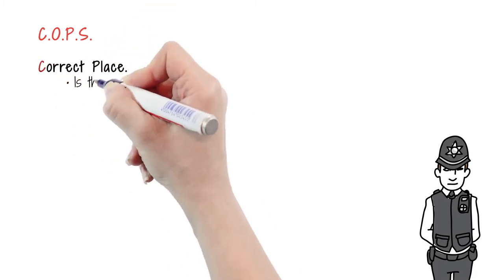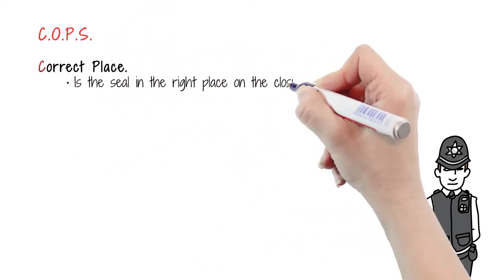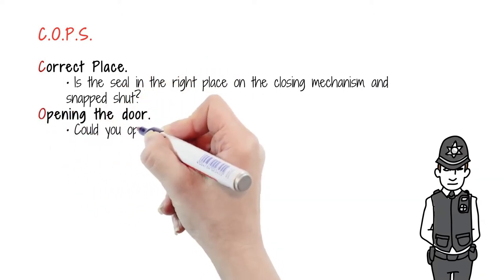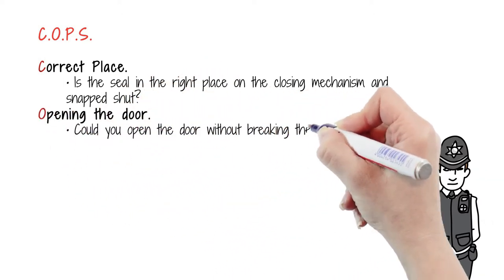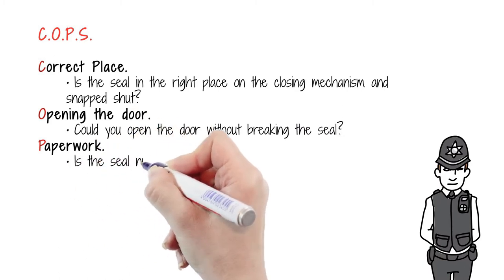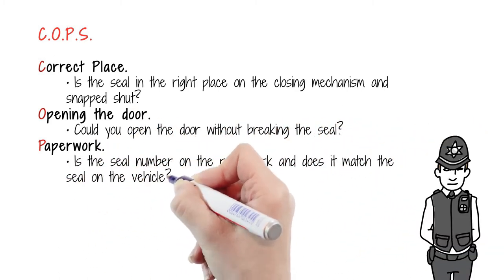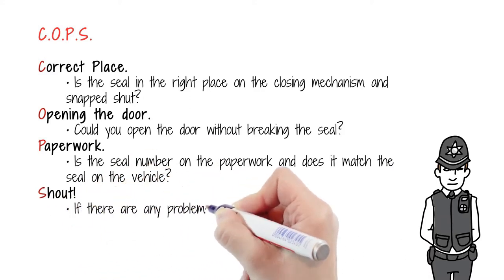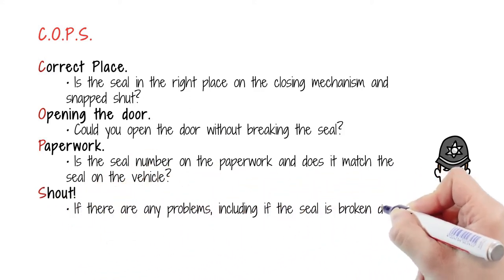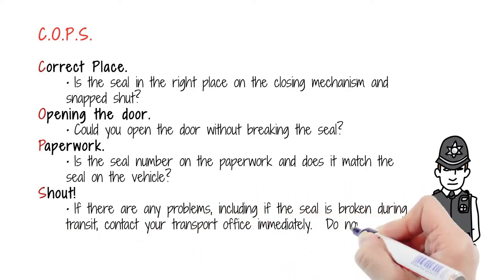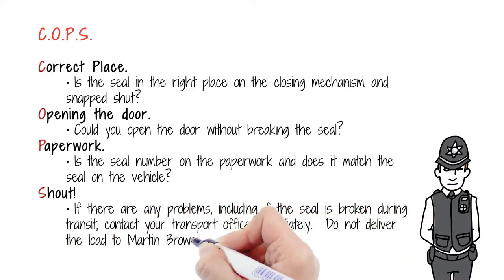C-O-P-S: Correct place - Is the seal in the right place on the closing mechanism and snapped shut? Opening the door - Could you open the door without breaking the seal? Paperwork - Is the seal number on the paperwork and does it match the seal on the vehicle? Shout - If there are any problems, including if the seal is broken during transit, contact a manager or your transport office immediately. Do not deliver the load to Martin Brower without it being correctly sealed.